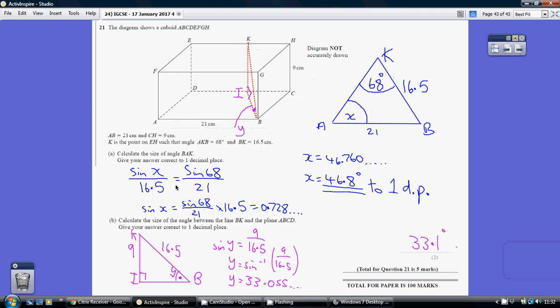Now for part B, we're asked to calculate the size of the angle between the line BK and the plane ABCD. Now I think it's important that you appreciate that the plane ABCD, which is just the base here, really has to be two dimensionally in the same line as the line BK.